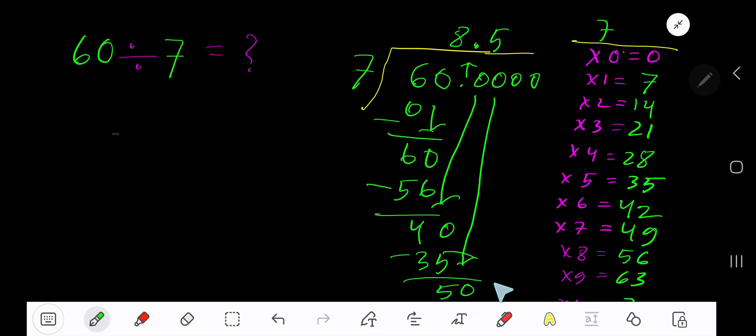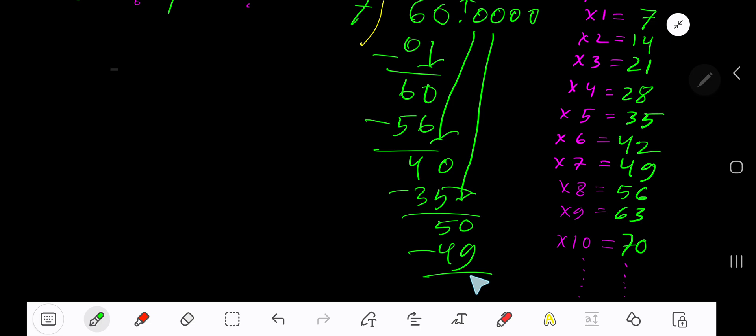7 goes into 50 how many times? 8 times would be 56, which is too much, so 7 times. 7 times 7 is 49. Subtract to get 1. Bring down another 0.